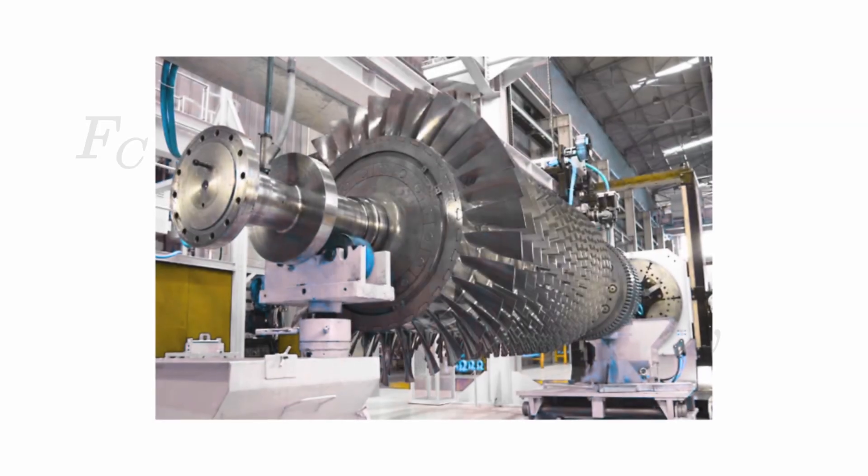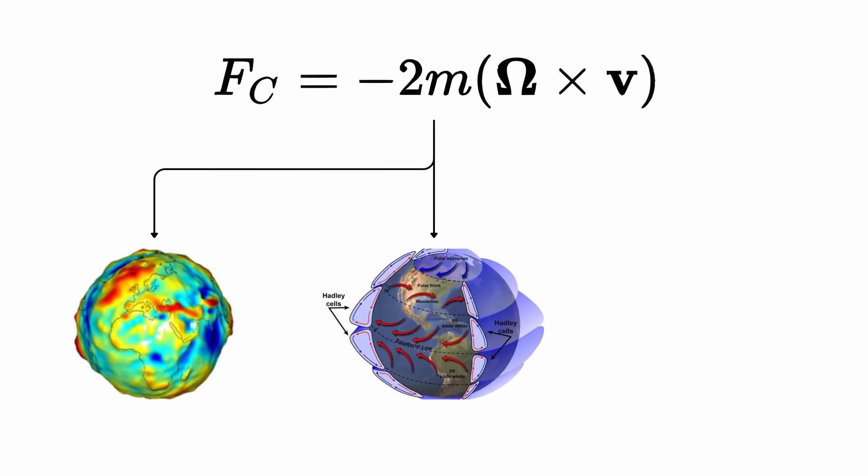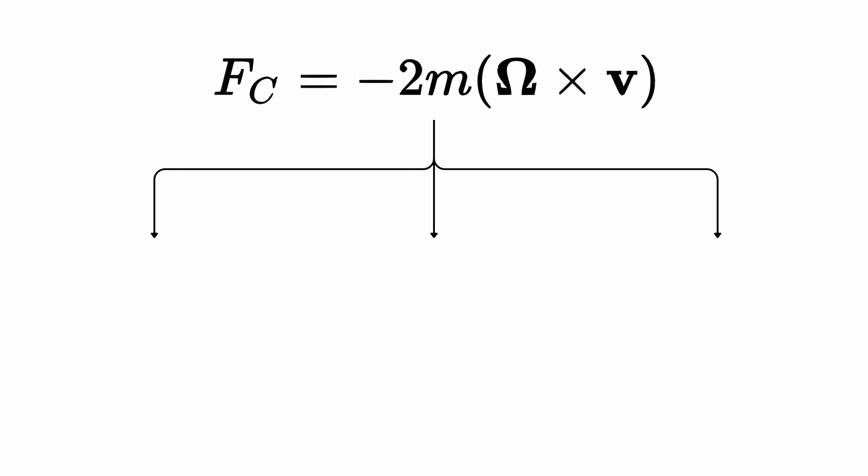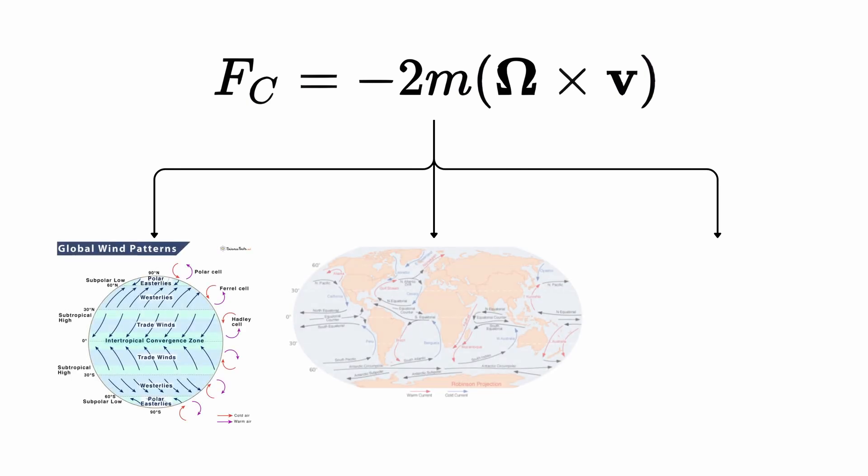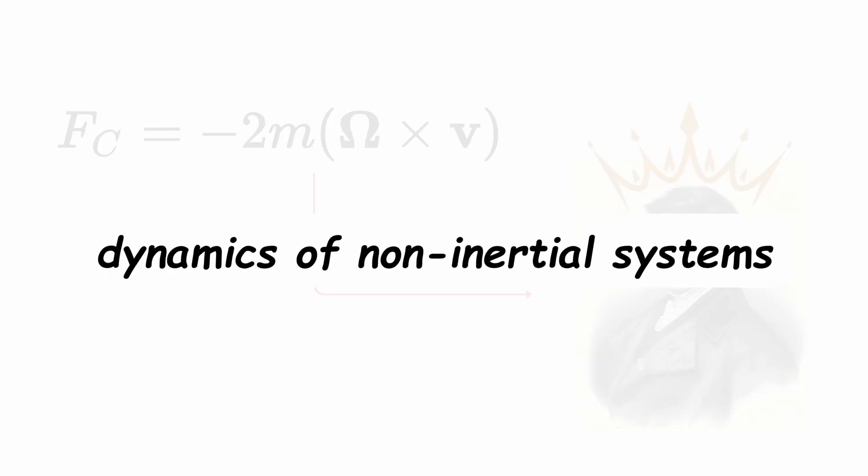Although it was conceived for rotating machines, its application in geophysics, meteorology, and oceanography is essential. The Coriolis force helps us understand wind patterns, ocean currents, and ballistic trajectories. Its discovery made Coriolis a key figure in the dynamics of non-inertial systems.